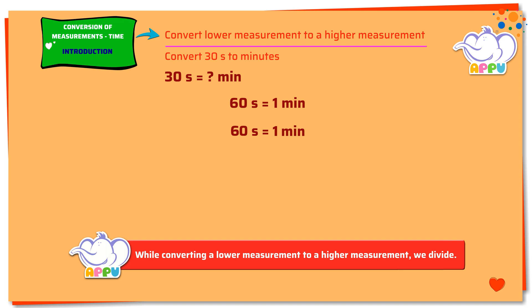Dividing both sides by 60, we get 60 seconds by 60 equals 1 minute by 60. 60 divides 60 once. Again, 60 divides 60 once. Now we get 1 second equals 1 minute by 60. To find how much is 30 seconds, we multiply both sides by 30. 30 times 1 second equals 30 seconds equals 30 times 1 minute by 60.